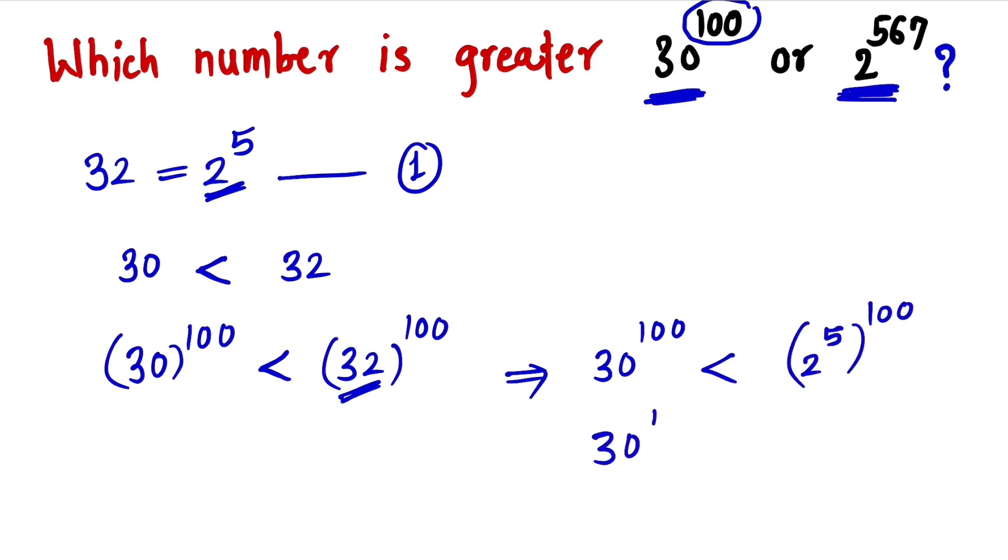That means 30 raise to 100 is less than 2 raise to 5 times 100, which is 500. Because this 500 is strictly less than 567, we can write this.